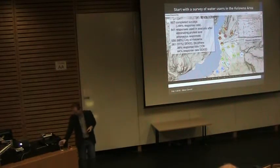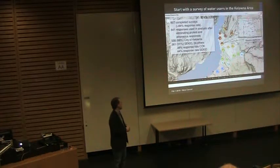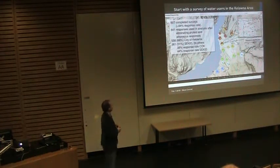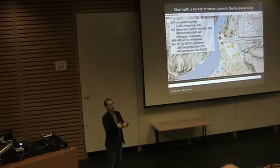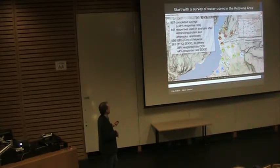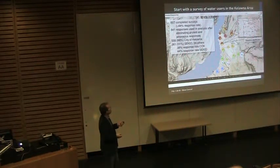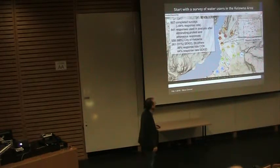Choice experiments are typically conducted through a quantitative survey. This was an online survey distributed in collaboration with the City of Kelowna, the Southeast Kelowna Irrigation District, and the Okanagan Basin Water Board. We received about 897 completed surveys throughout the Kelowna water management area — about 66% from the City of Kelowna and 31% from the Southeast Kelowna Irrigation District — representing a good random sampling of residents.